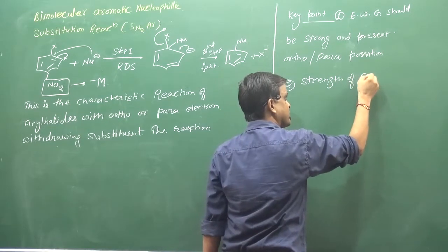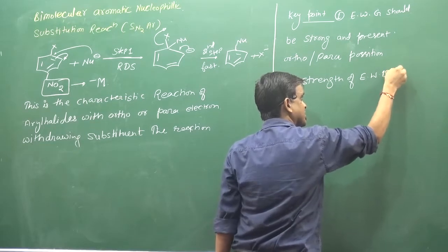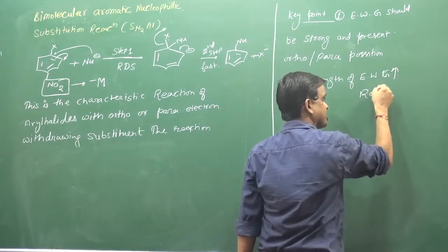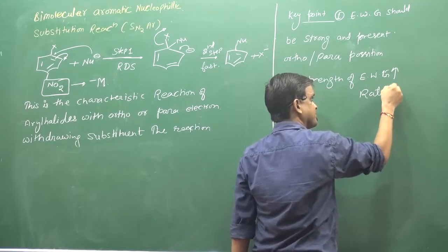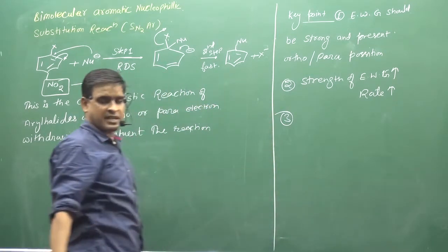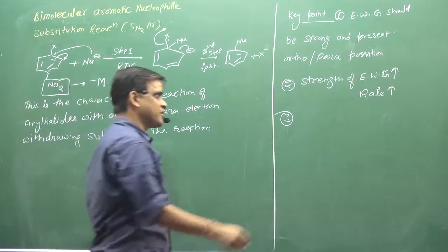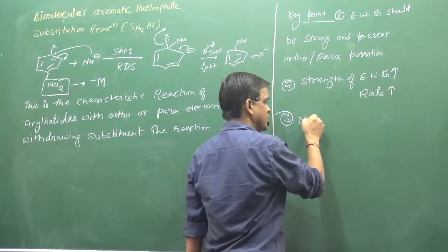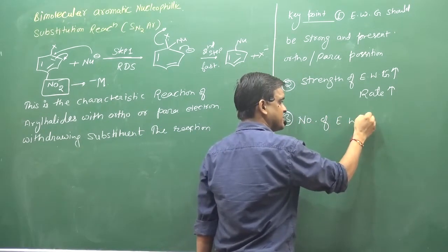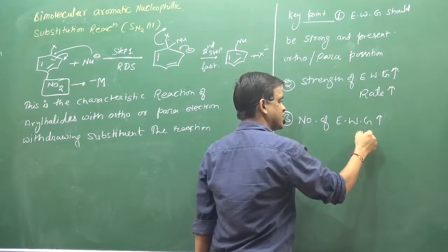Second point: the stronger the electron withdrawing group, the faster the reaction will be. Third point: the greater the number of electron withdrawing groups, the higher the rate will be.